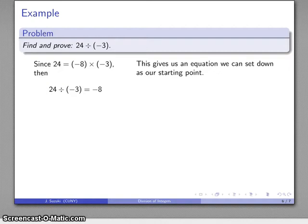Then my definition of division allows me to invert that: 24 divided by negative 3 gives me negative 8. There's my simultaneous answer and proof.